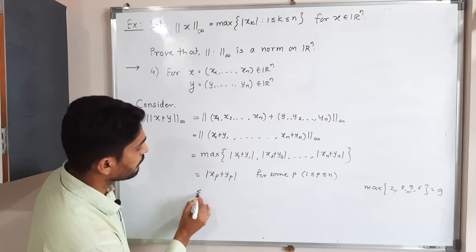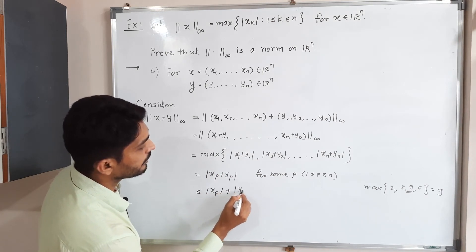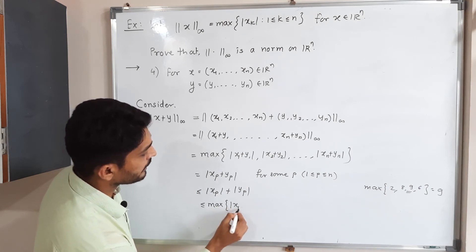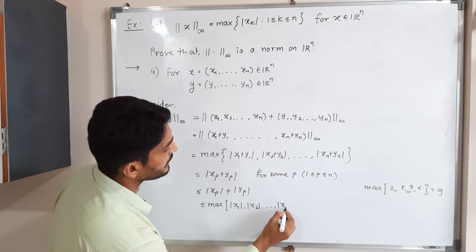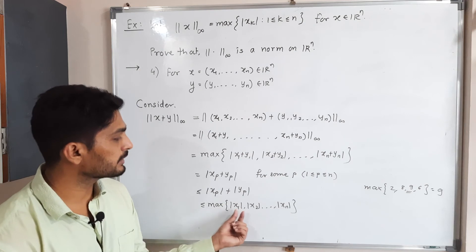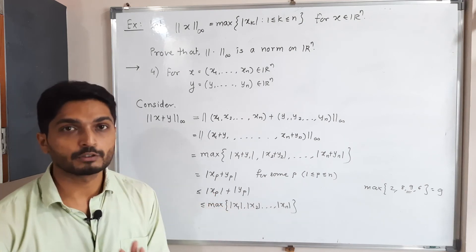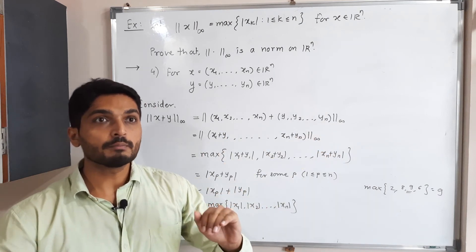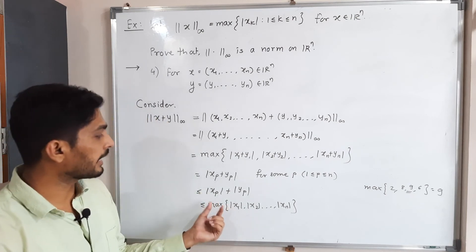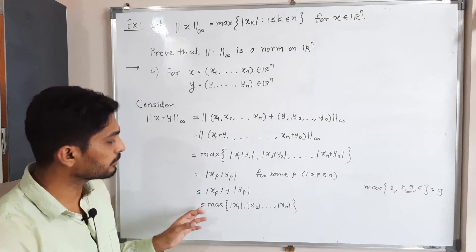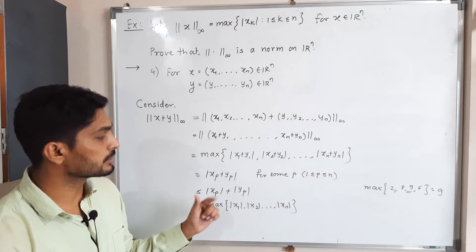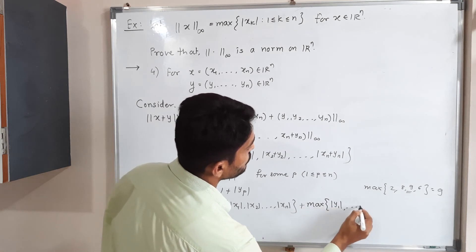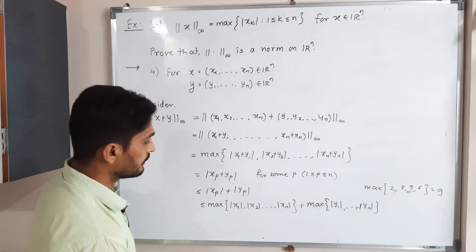By the triangle inequality for absolute values, |xₚ + yₚ| ≤ |xₚ| + |yₚ|. Now, |xₚ| is one of the values |x₁|, ..., |xₙ|, so it is less than or equal to max(|x₁|, ..., |xₙ|) = ‖x‖∞. Similarly, |yₚ| ≤ max(|y₁|, ..., |yₙ|) = ‖y‖∞. Like any student's height is less than or equal to the tallest student's height.